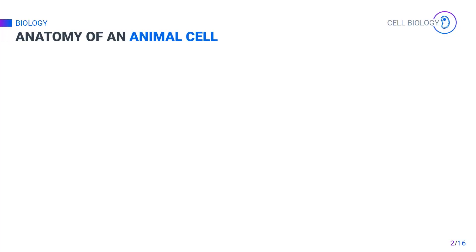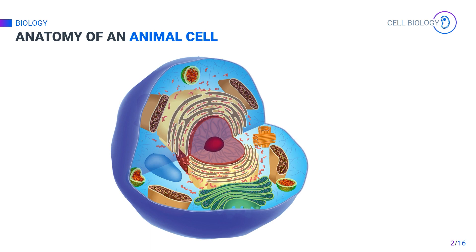Anatomy of an animal cell. Let's look at the structure of an animal cell. Animal cells have various kinds of organelles within their cytoplasm that work together to allow the cell to perform its functions. Here we will look at the different components of the cell.